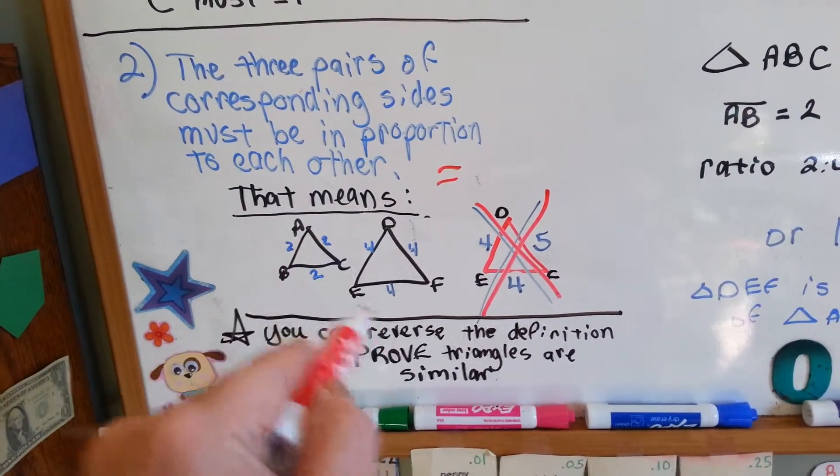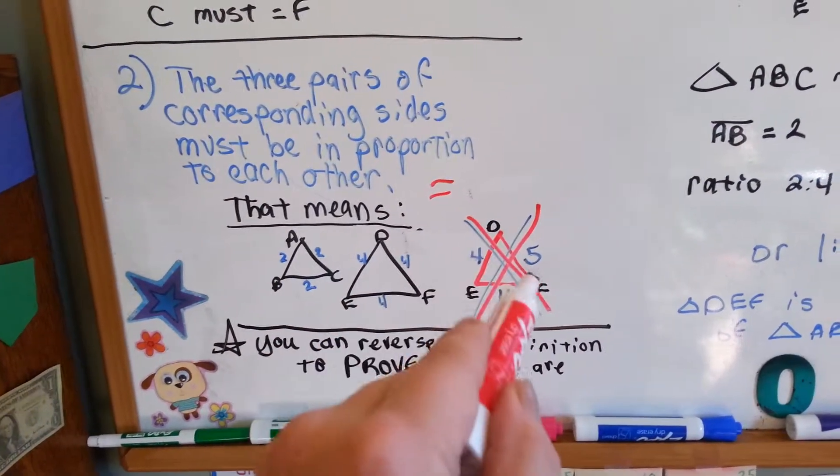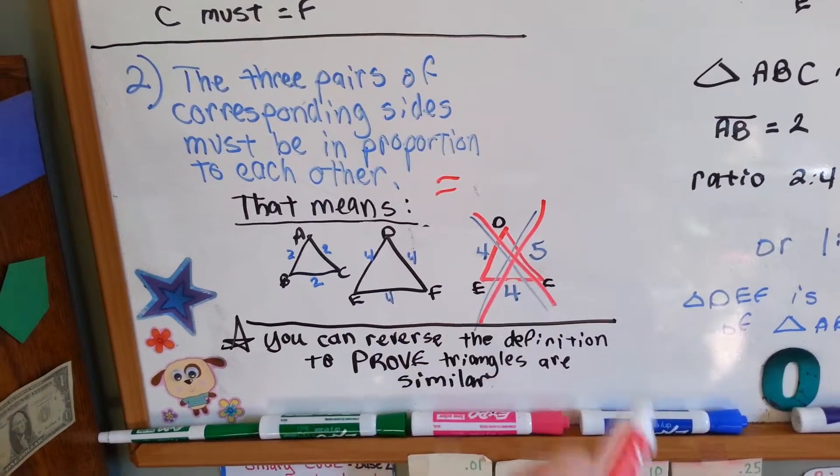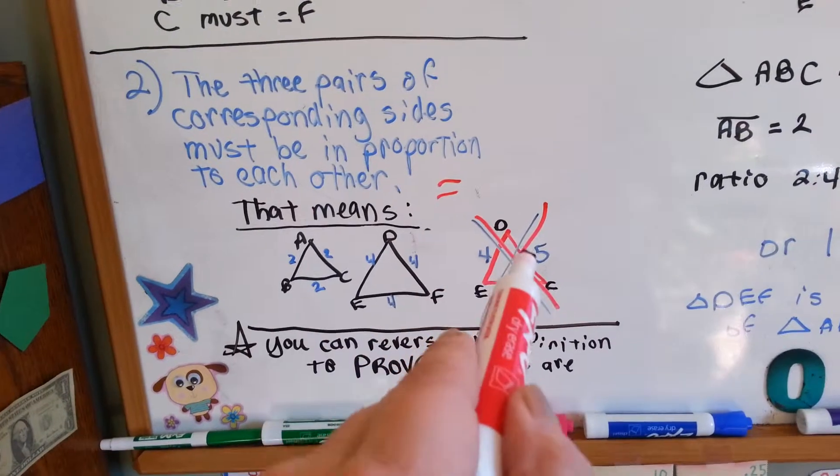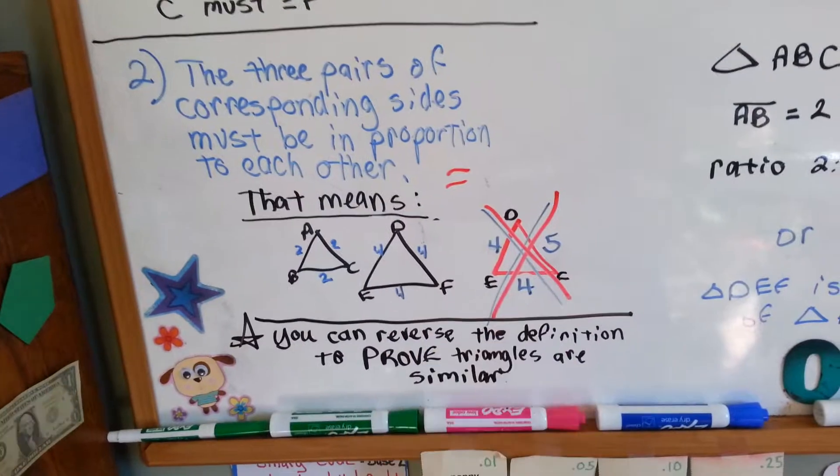And the corresponding sides are not in proportion with each other, because AC is 2 and DF is 4, so that's perfect. This one's double the size of that one. But this one comes out of left field with its measure of 5, so it makes it so this is not similar to that one or to that one. It broke the rules.